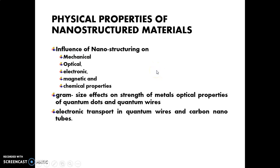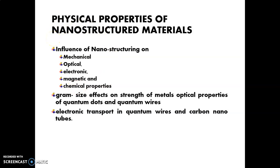The fifth unit topics cover physical properties of nanostructure materials. We already saw the properties of nanostructure nanomaterials. Then the influence of nanostructuring on the following properties: mechanical, optical, electronic, magnetic, and chemical properties. Then, the grain size effect on the strength of material, optical properties of quantum dots and quantum wires.